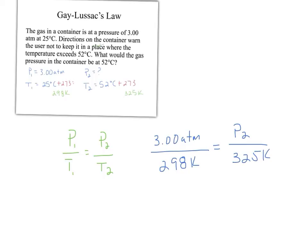I'm going to multiply both sides by 325 Kelvin. So my 325 Kelvin on this side cancels out. Multiply this side by 325 Kelvin. Notice that my units of Kelvin cancel out. I'm left with the units of ATM.